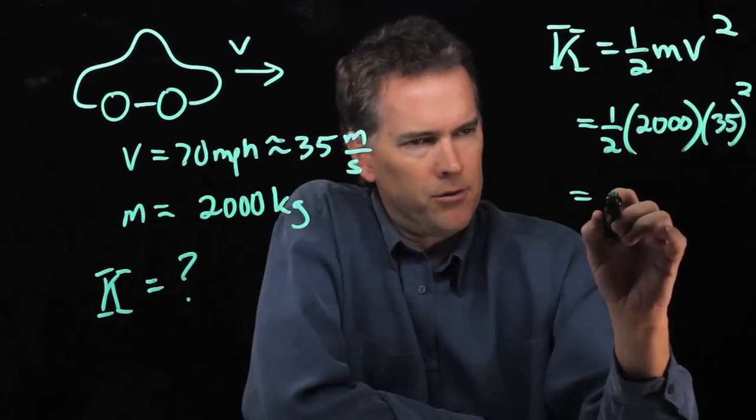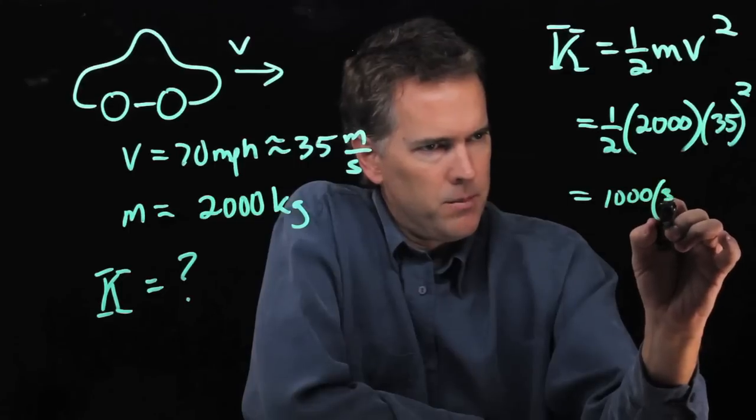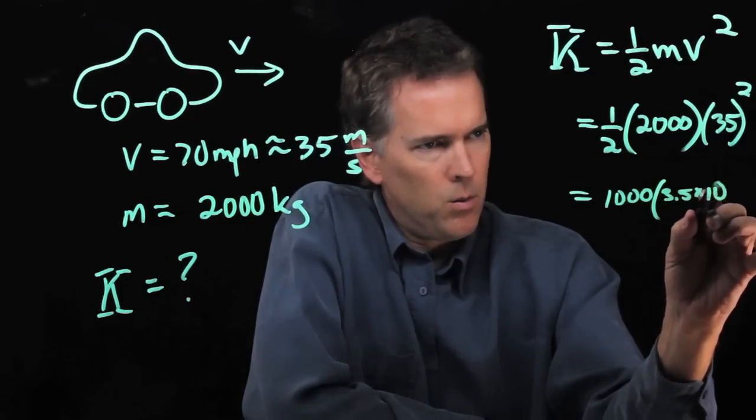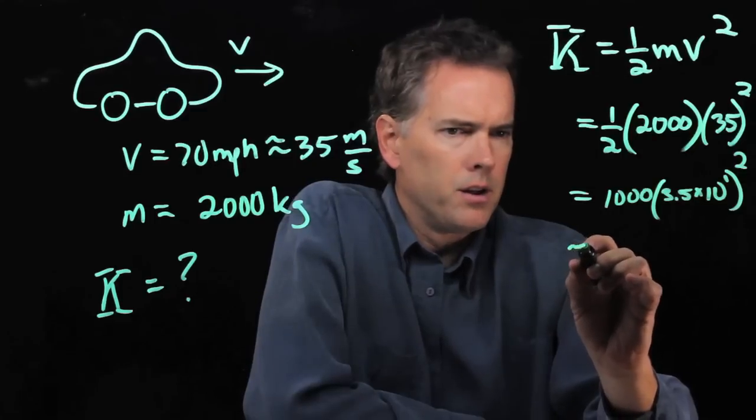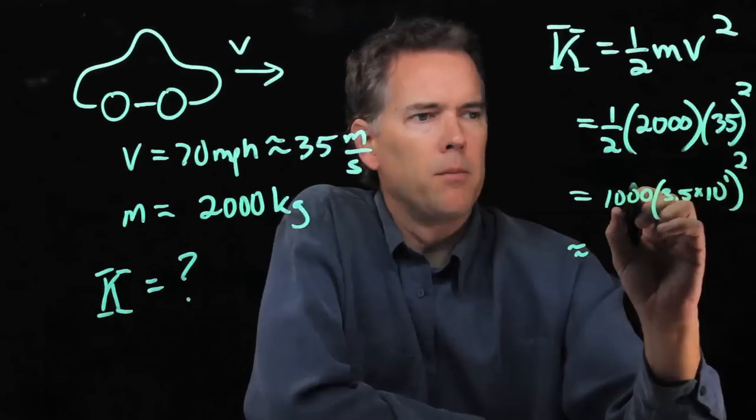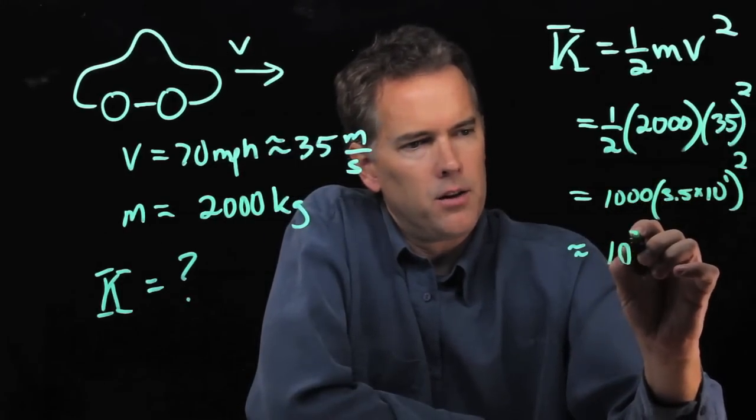Well half times 2,000 is 1,000 and then we have 3.5 times 10 to the 1 quantity squared. You can punch this into your calculator. I'm gonna say this has got to be roughly what? 1,000 is 10 to the 3.